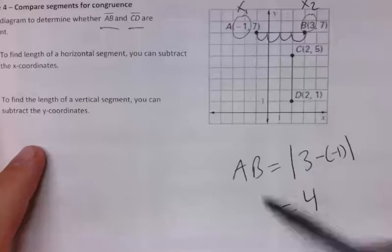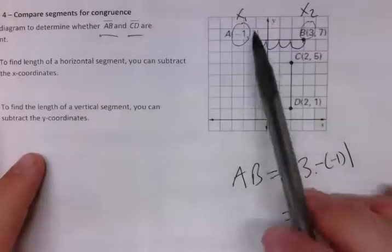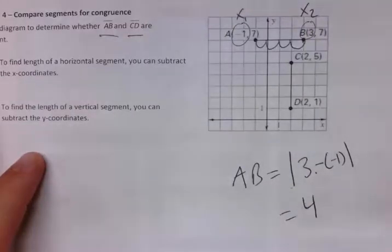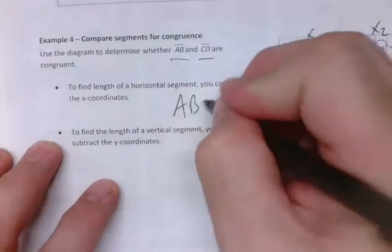But really you should be able to do it this way too because all you're really doing is subtracting. If you bring it the other way and you do negative 1 minus 3, you're going to get negative 4. But since it's absolute value, you're still going to get 4. So AB equals 4.